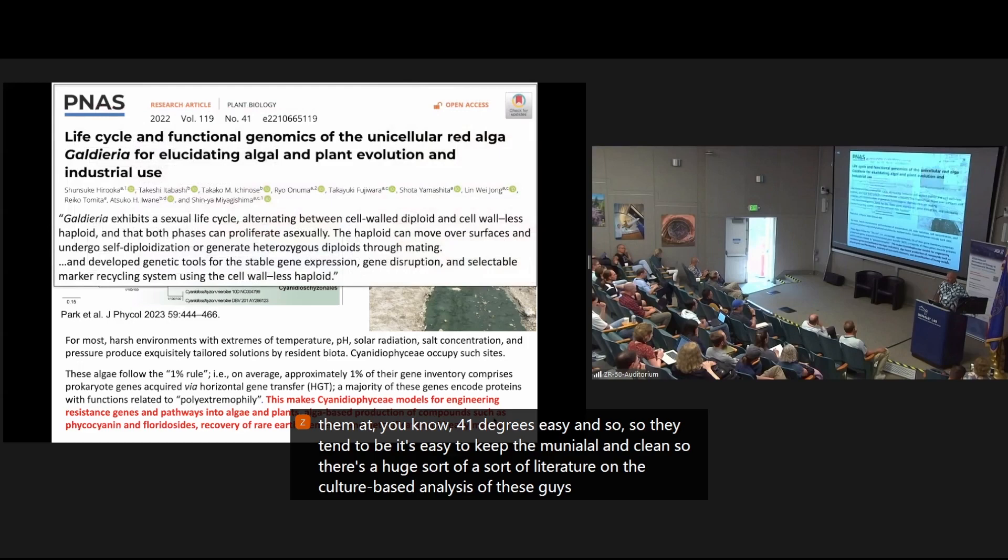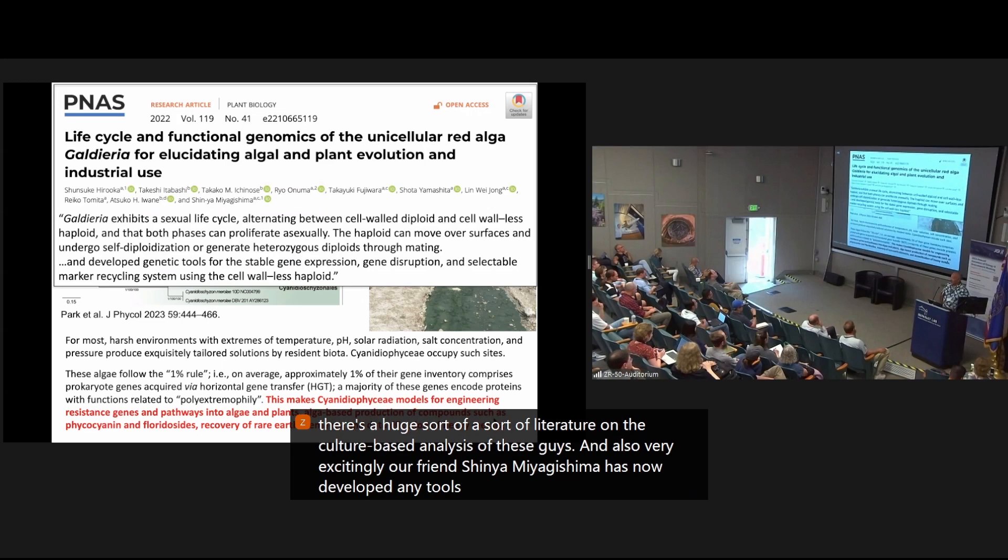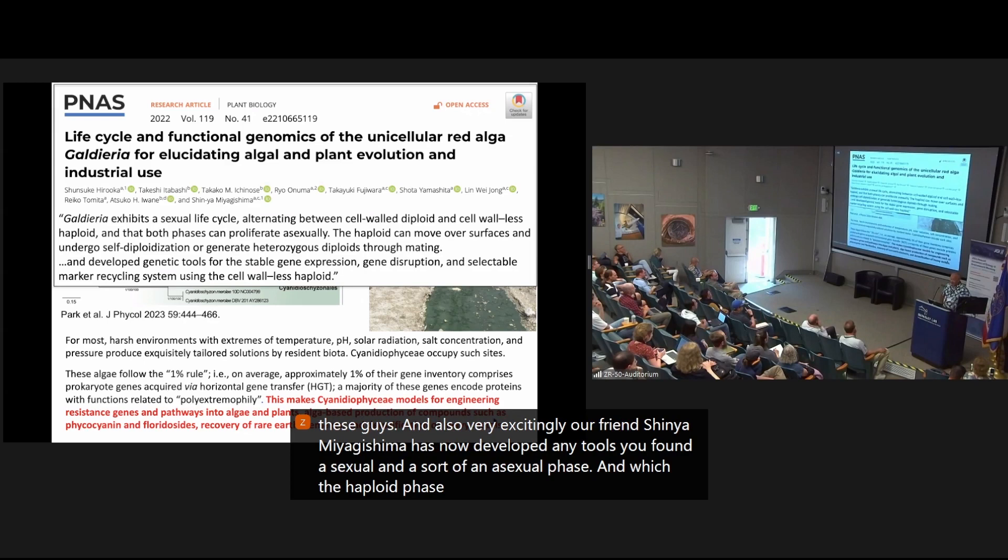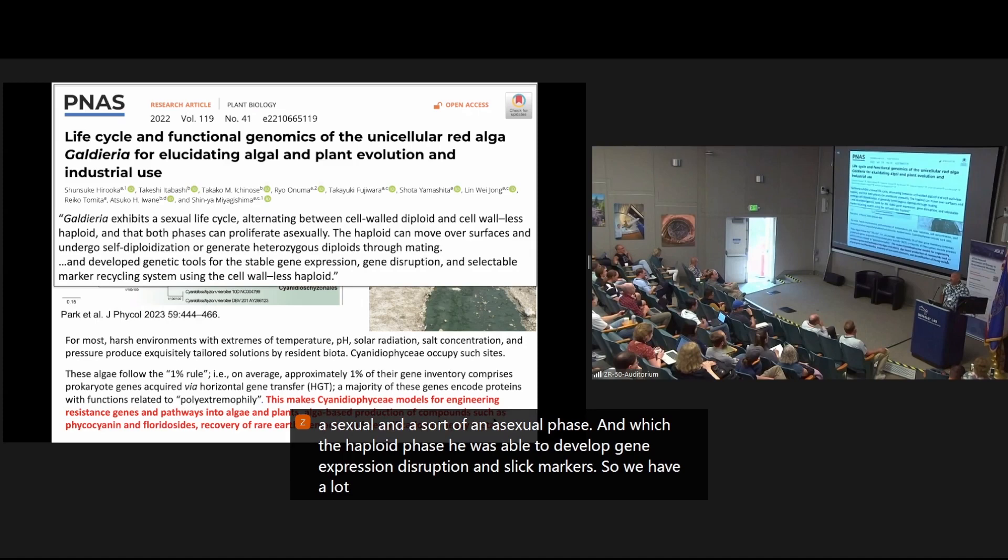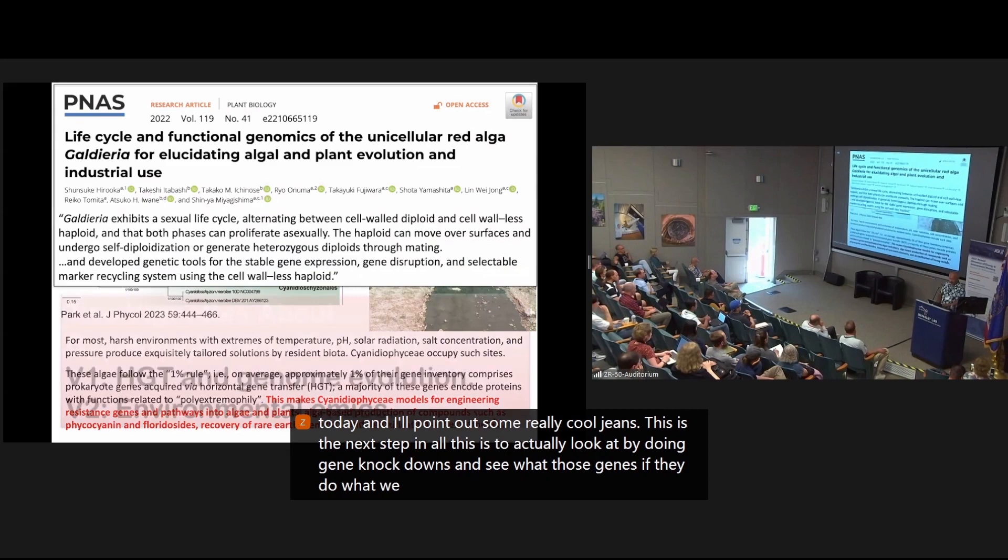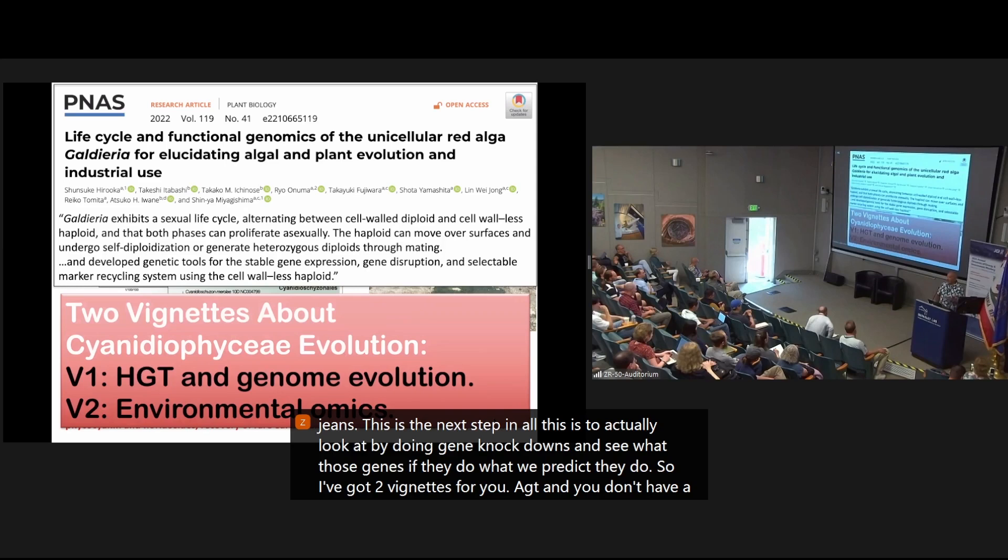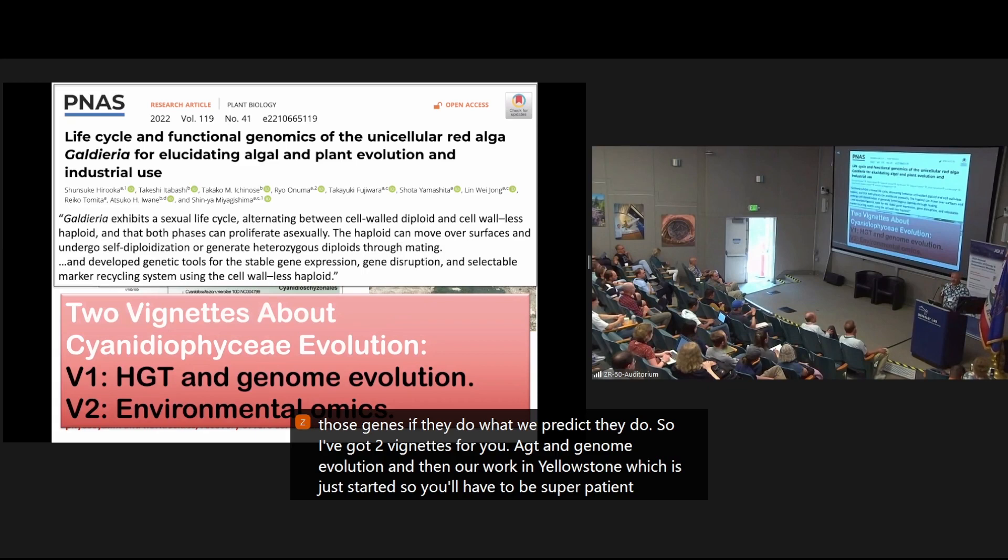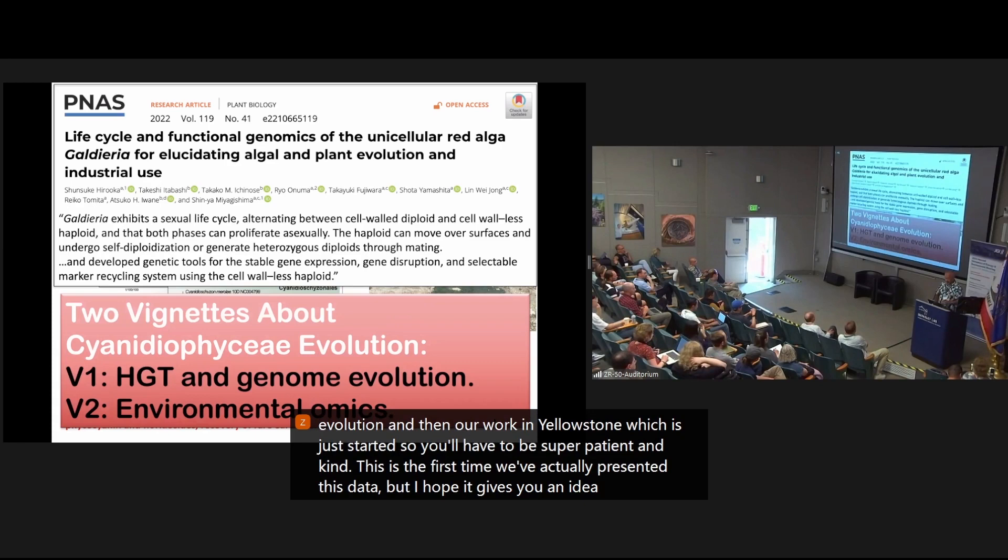And also, very excitingly, our friend Shinya Miyagishima has now developed genetic tools. He found a sexual and an asexual phase in which the haploid phase, he was able to develop gene expression, disruption, and selective markers. So we have a lot of potential here. So the story I'll talk about today, and I'll point out some really cool genes, this is the next step in all this, is to actually look at by doing gene knockdowns and see what those genes, if they do what we predict they do. So I've got two vignettes for you, HGT and genome evolution, and then our work in Yellowstone, which has just started, so you'll have to be super patient and kind. This is the first time we've actually presented this data, but I hope it gives you an idea of why this kind of work is very, very exciting to do.